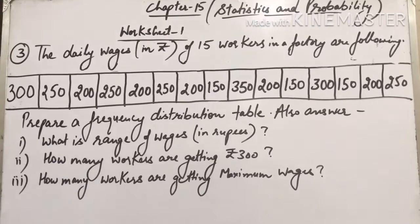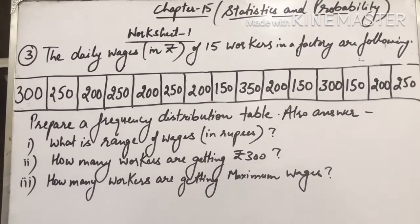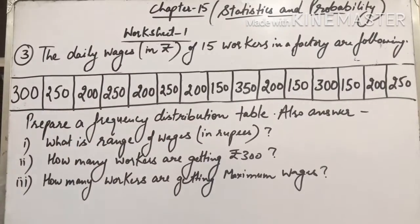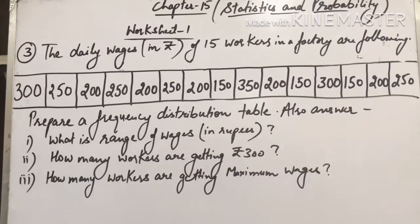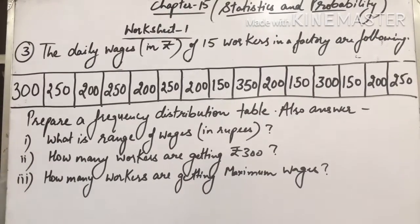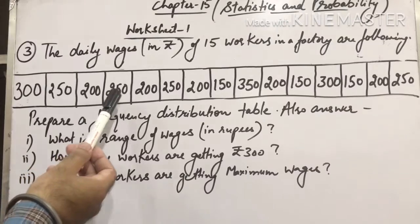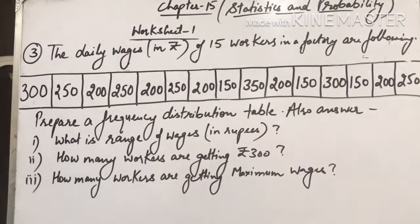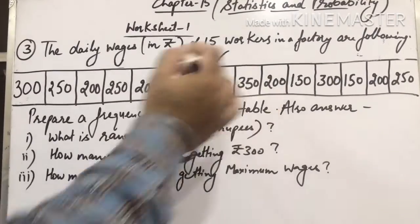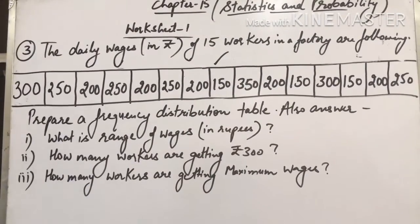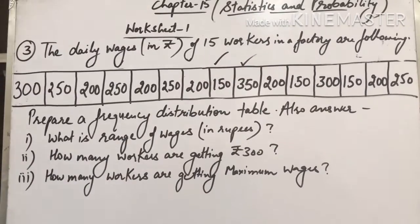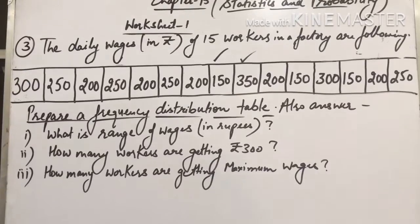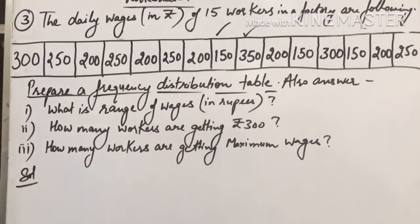Now students, let us consider another example, that is question number 3 of your worksheet. The question says: the daily wages, which is in rupees, of 15 workers working in a factory are the following. Wages are given—you can see in the table: 300, 250, 200, then there is 150 as well, and again 300, 200, 250. So minimum value is how much? 150. And the maximum wages? 350. Again we need to prepare a frequency distribution table first, just like we learned in the first question.